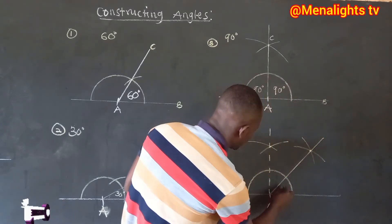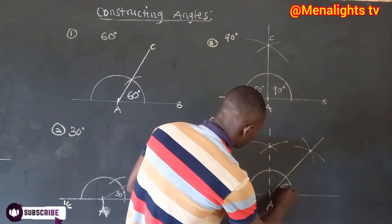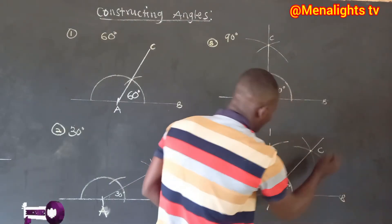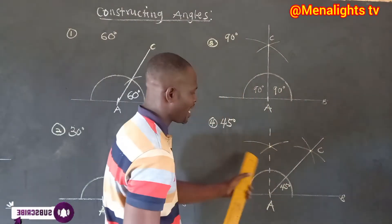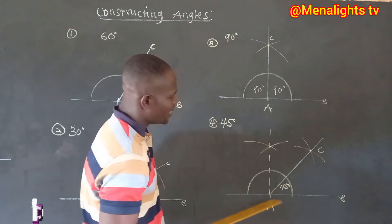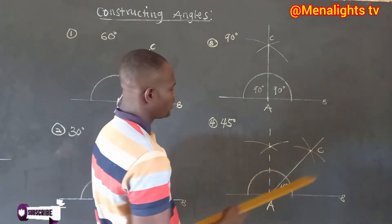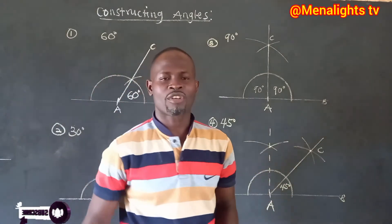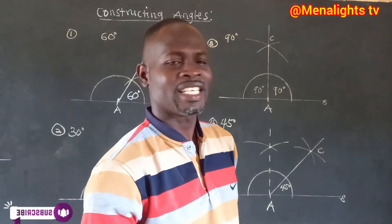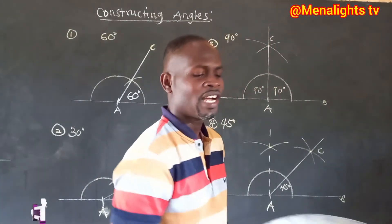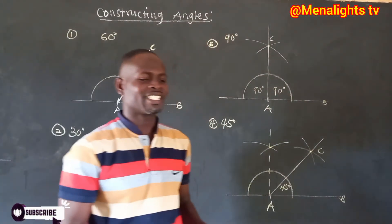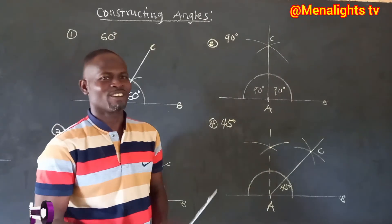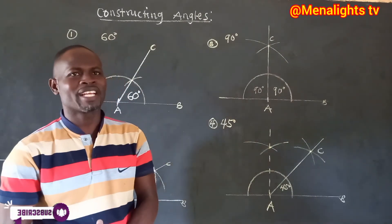The angle formed here is 45 degrees. With points B and C, we can see that angle DAC is 45 degrees. Now we are going to cross-check and see if our construction is perfect — whether we have the correct and accurate figures.